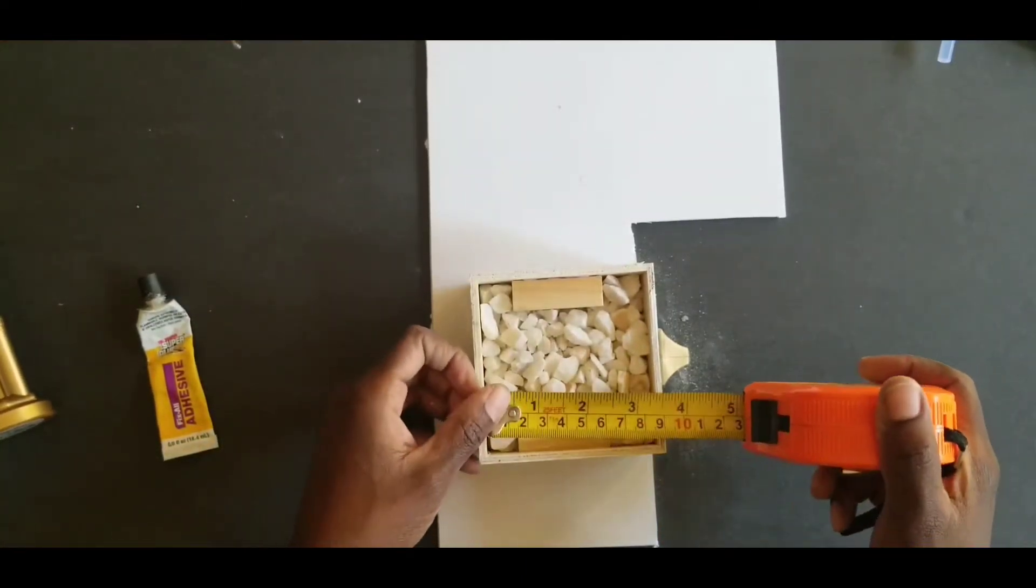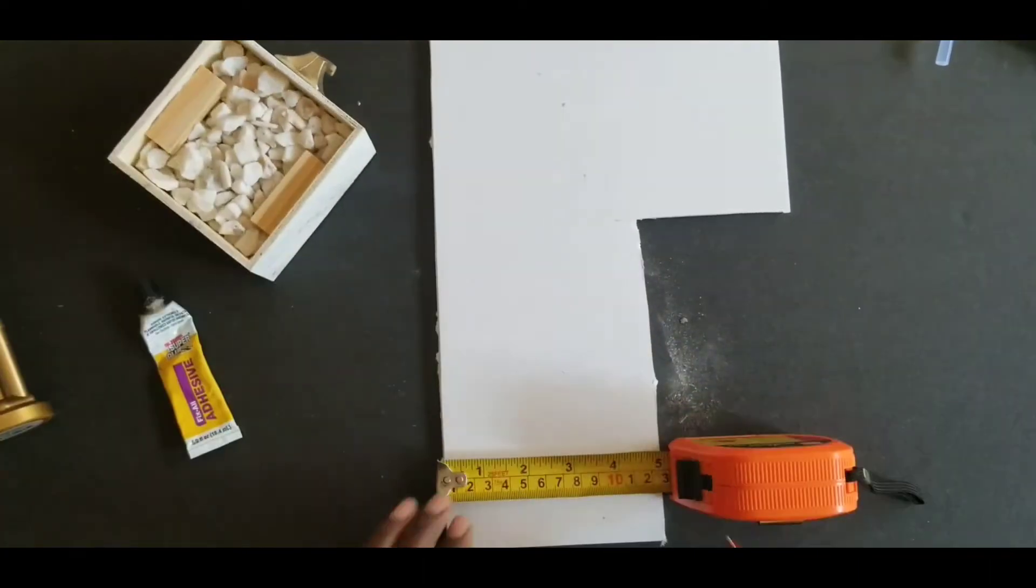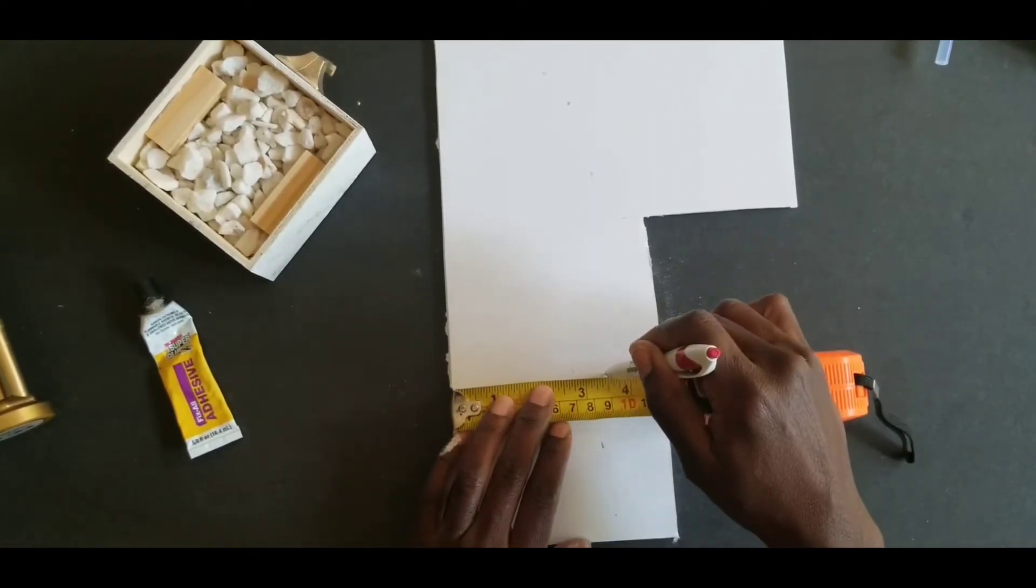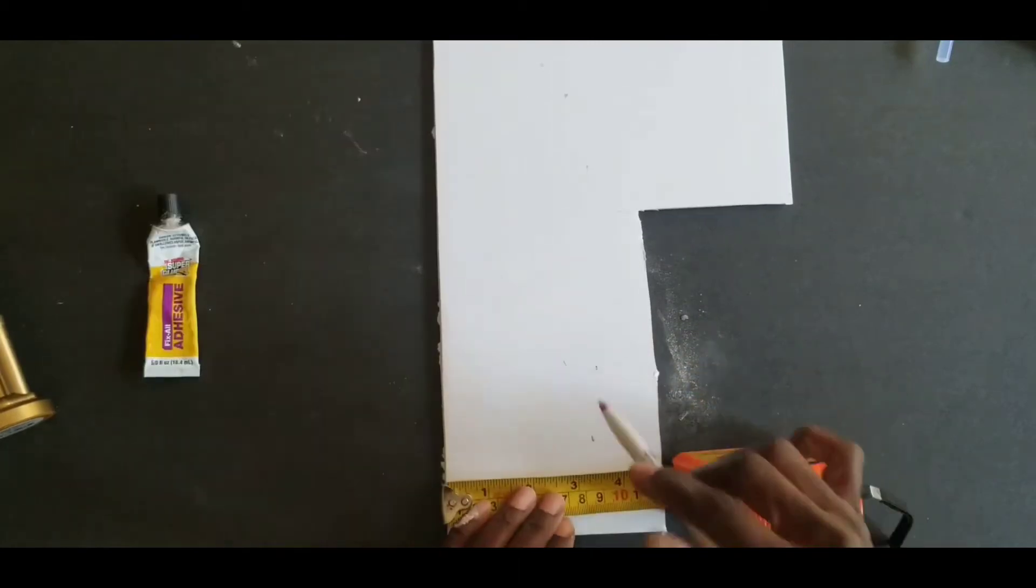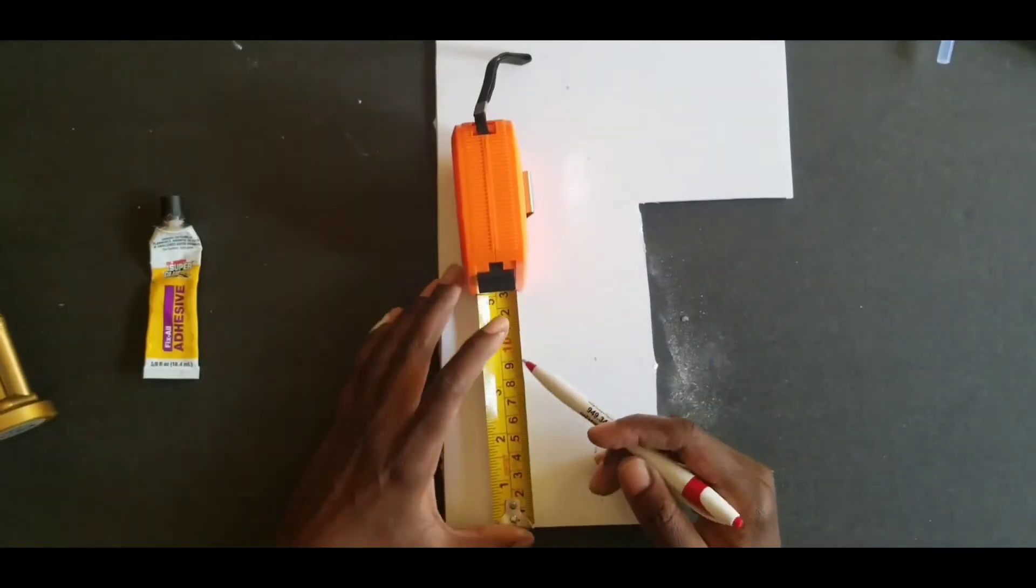I attempted to measure out this foam board and it looked like I needed a square, three inches, three and a half inches I think it was, both sides. So I did my best, but still ended up needing to trim it down a little bit in the end, which is no big deal.